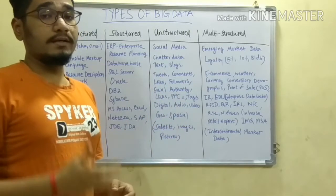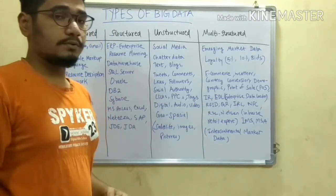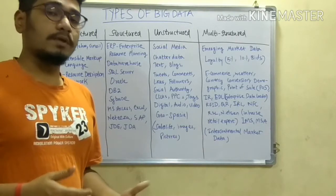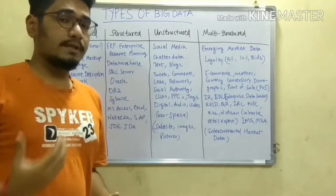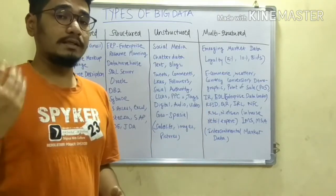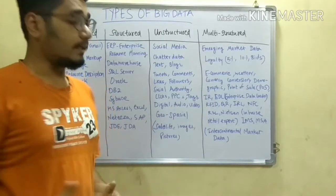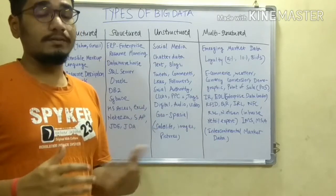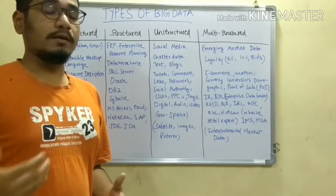Next is RFID — Radio Frequency Identification — and QR — Quick Response. IRL and RSL are related to retail solutions done on a market basis. NFC — Near Field Communication — is like Bluetooth and is used for communication between two devices. Nielsen is another kind of multi-structured data — a website that is an expert in in-house retail solutions. IMS is Intercontinental Market Data, providing a dashboard of market activities across continents throughout the day. MSA — Measurement System Analysis — shows how much market data is emerging globally.